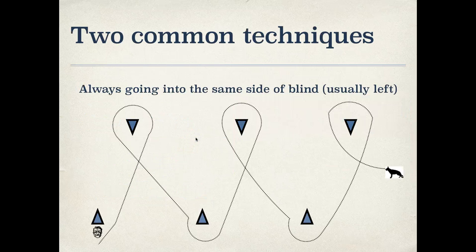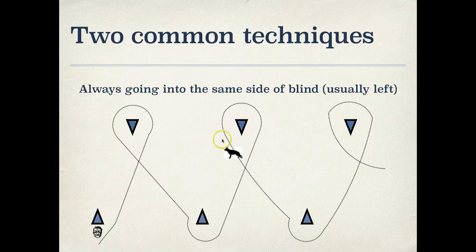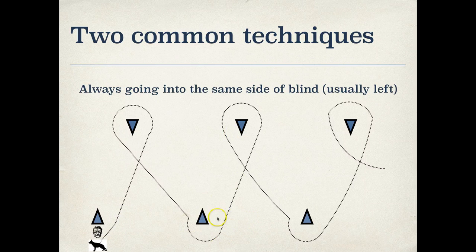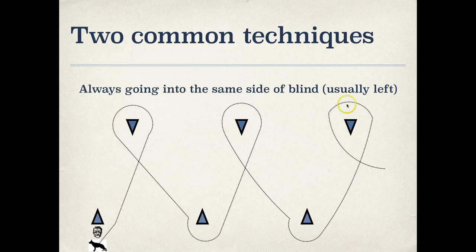The two common techniques for running the blinds. This is the one I teach, always going into the same side of the blind. So the dog's always going to go into the left side of the blind and leave the right. This technique is not without its drawbacks. Here at blind four, you'll see a lot of dogs around this blind. They'll know the helper's in six here. So they'll take a shortcut and go directly to six rather than going to five. So just know that's a downside of this technique. The upside is it's easier to teach. The dog's only ever going in one side and only ever leaving one side.